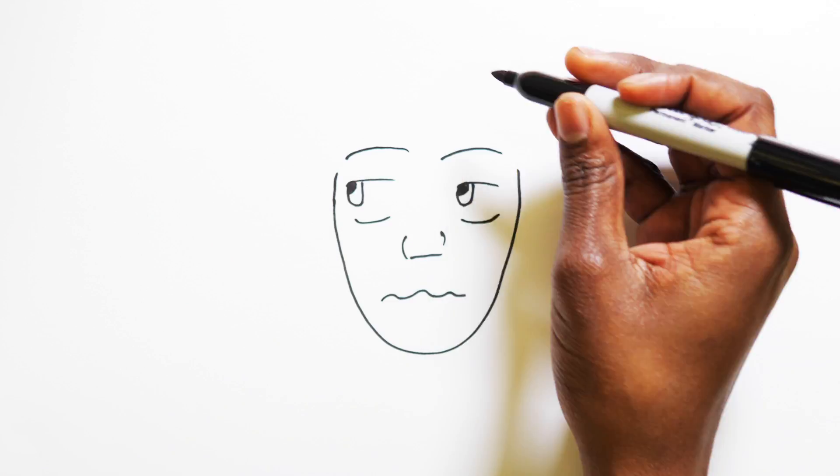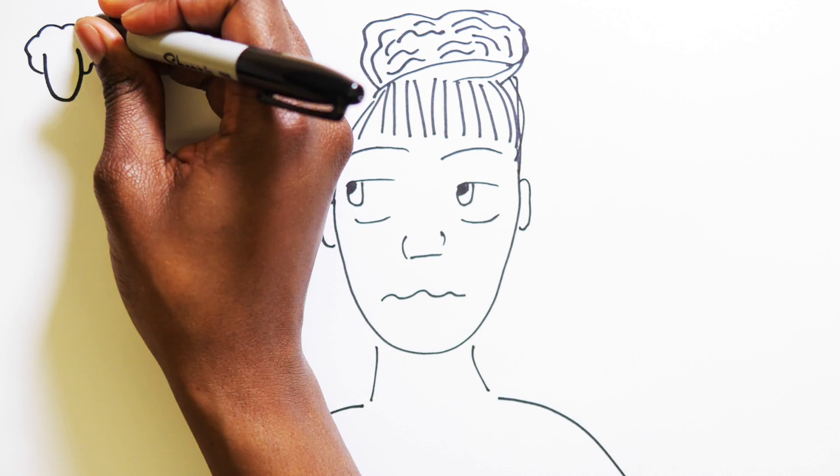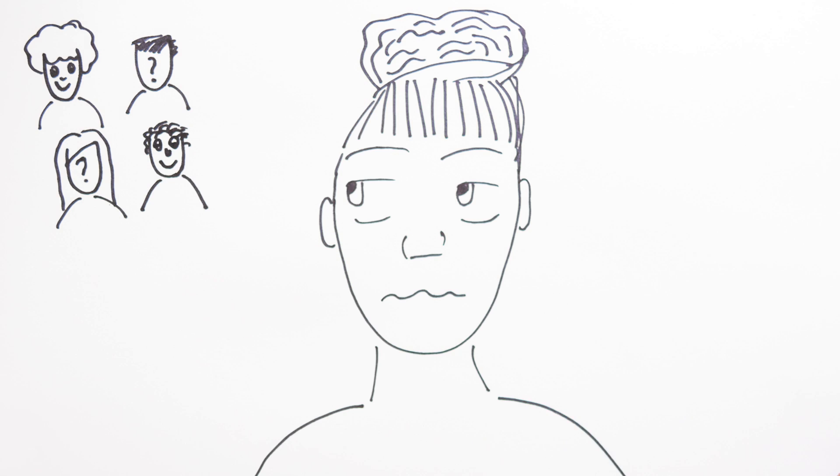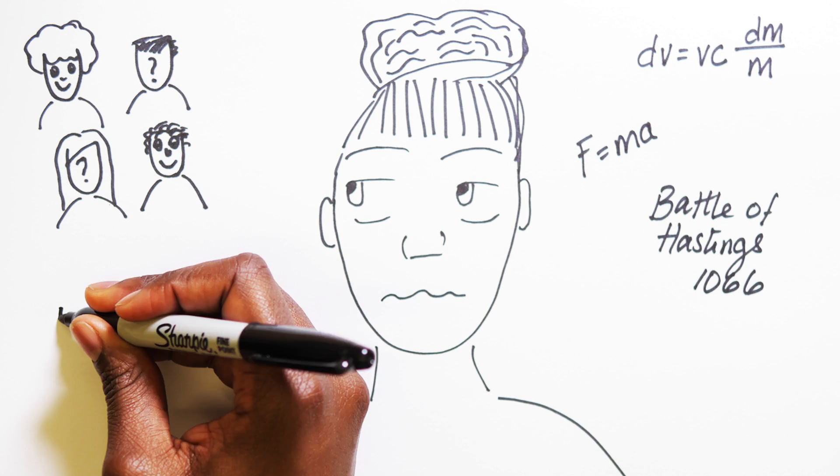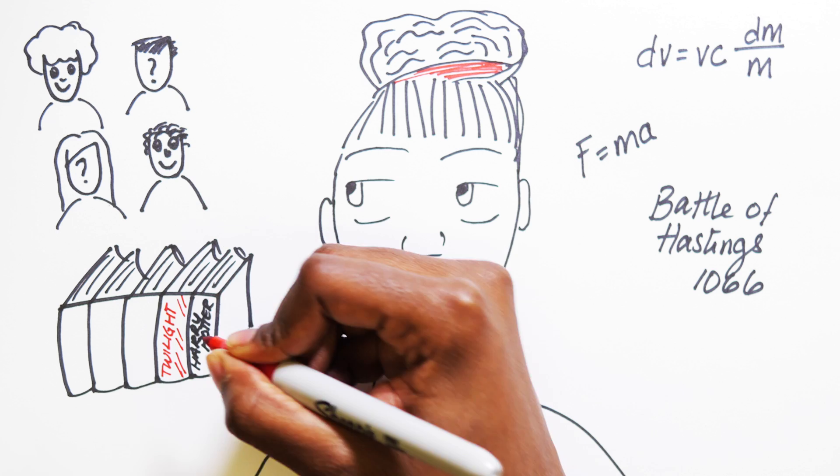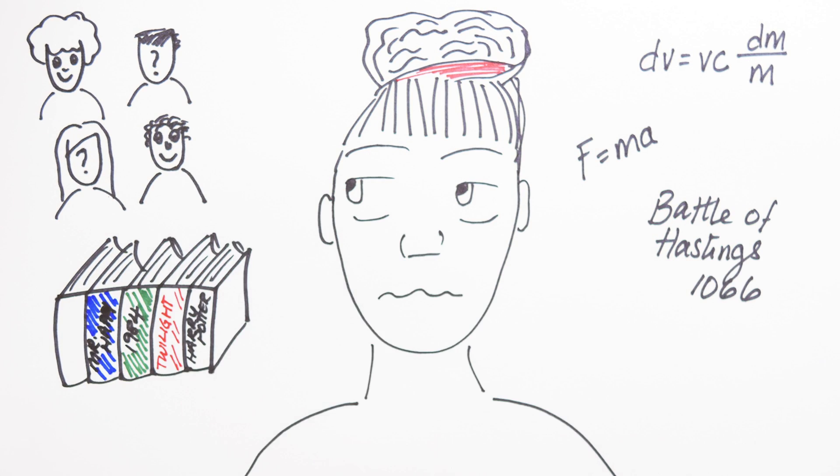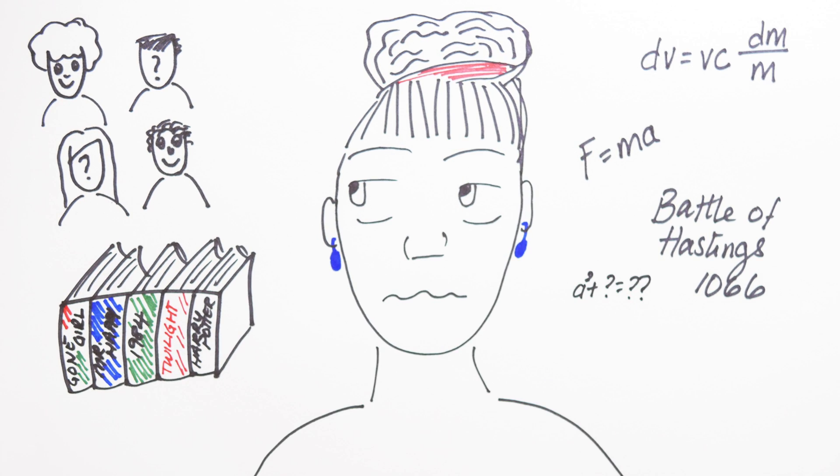We all wish we had a better memory, but just think about how much information your brain actually holds. Sure, we may forget the cousin-in-law's name or perhaps the formula we needed for that physics exam, but consider this: a healthy human adult can store an estimated 2,500 terabytes of information, which is approximately 2.5 billion novels.